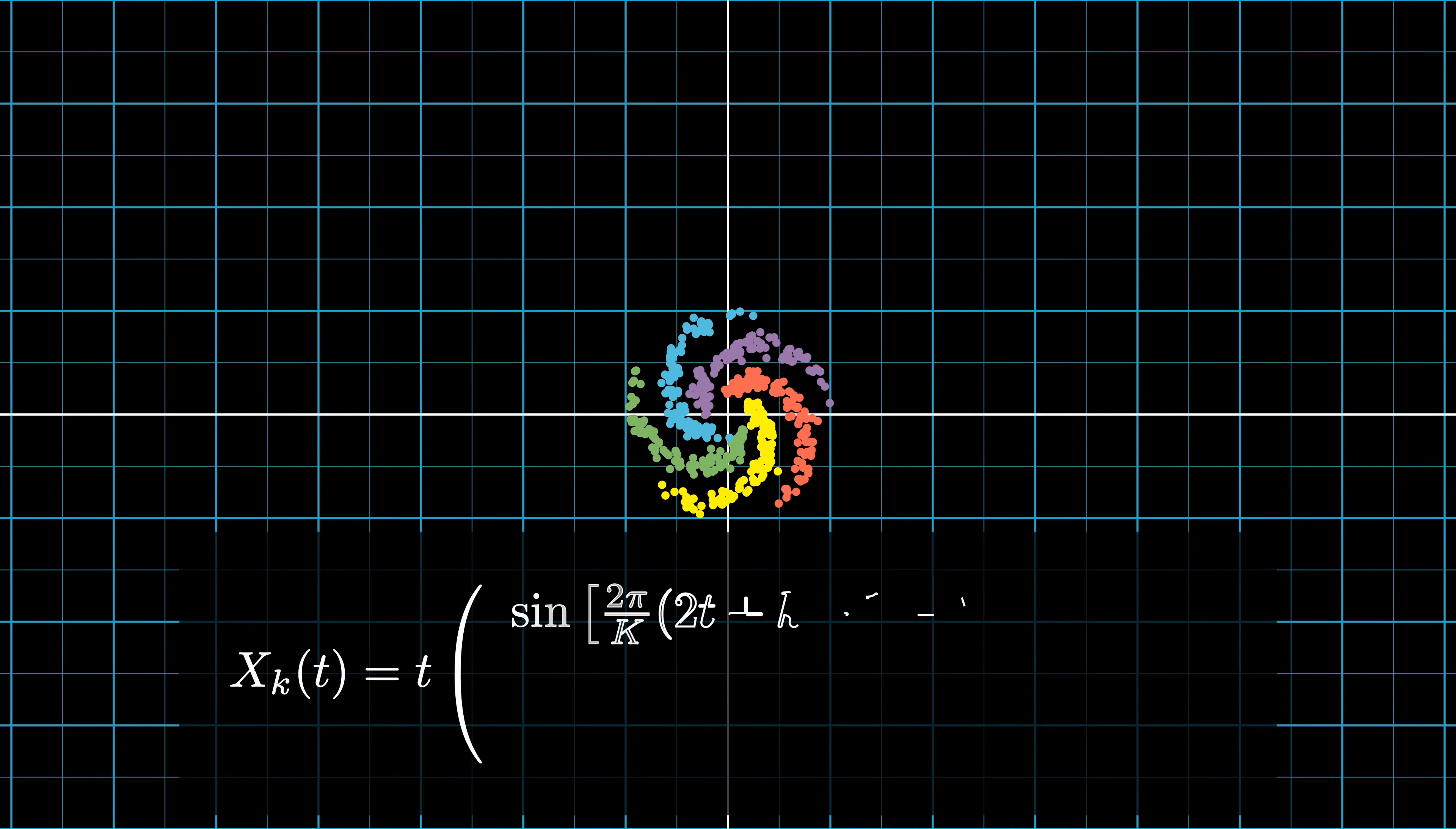For the curious, these are the parametric equations used to generate these spirals. Capital K is the number of spirals, and lowercase k goes from 1 to capital K, which represents the kth spiral.